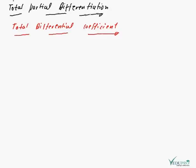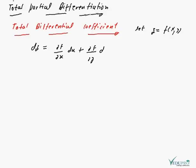Now we are doing the next topic, that is total partial differentiation, in which we are starting from the total differential coefficient. If z is the function of x and y, then dz can be calculated by the relation: dz = (∂f/∂x)dx + (∂f/∂y)dy. Here dz is said to be the total differential.